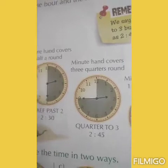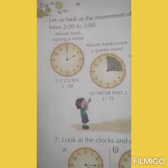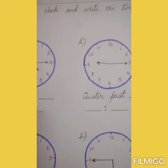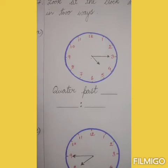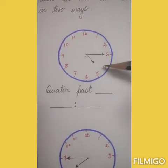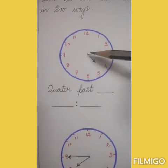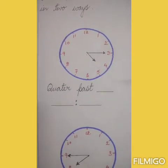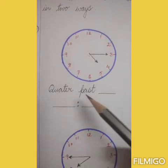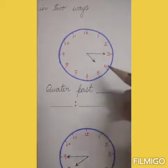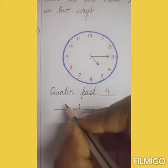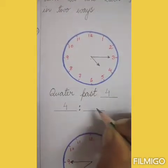Now let us do question number 7: look at the clock and write the time in two ways. Number A: the hour hand is below 4 and the minute hand is at 3, so you have to write quarter past 4, and the time is 4:15.